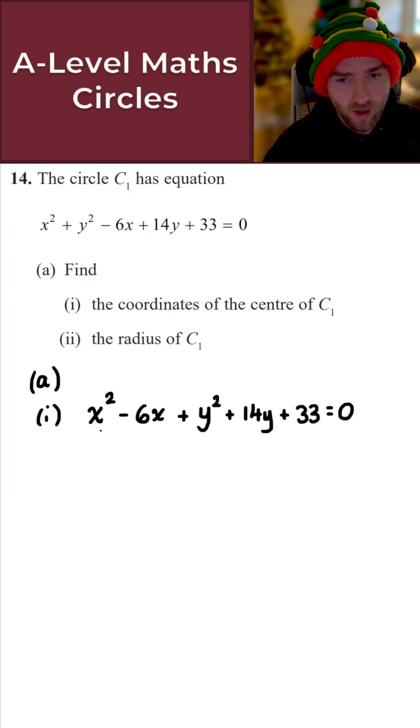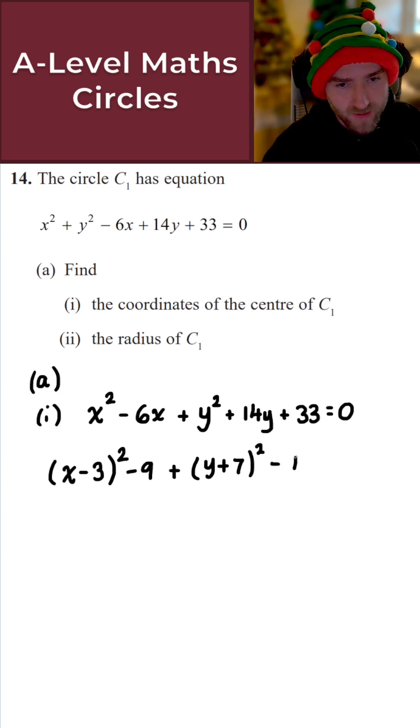So let's just complete the square here on the x terms. So I get x minus 3, that's all squared, I get minus 9. So that's the x part dealt with. Let's do the y part here. So I get y plus 7, so y plus 7 here. We square that. I get minus 49.